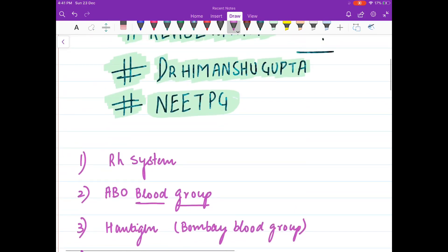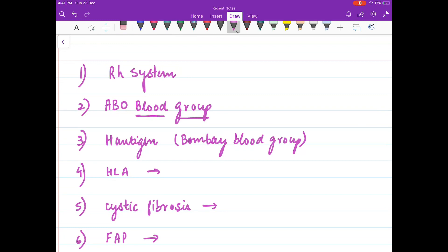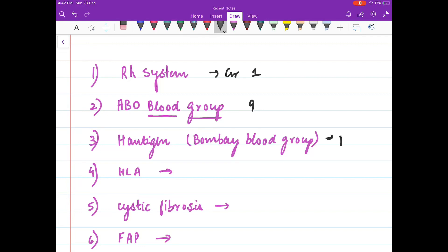So the answers to these questions are: Rh system is present on chromosome 1. ABO blood group is present on chromosome 9. H antigen is present on chromosome 19, and if H antigen is absent, it is Bombay blood group.